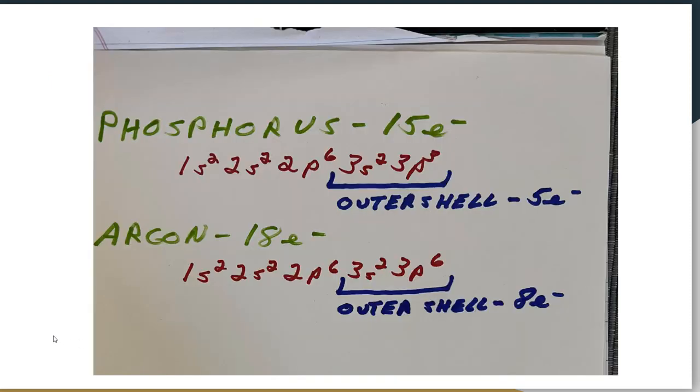A little bit of review. Remember the octet rule: atoms want to have eight electrons in their outermost shell. There's phosphorus, and it has five electrons in its outer shell, so it wants to pick up three. Argon, on the other hand, an inert gas, already has eight, so therefore it is a very stable atom.